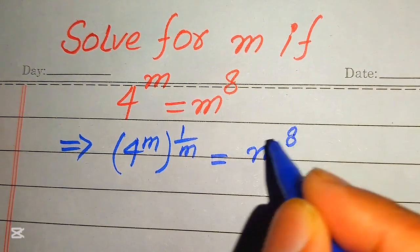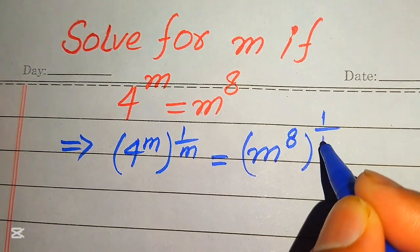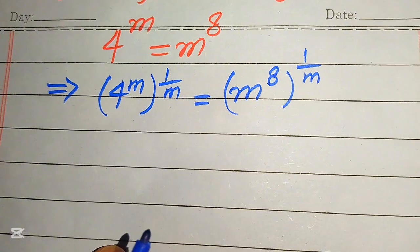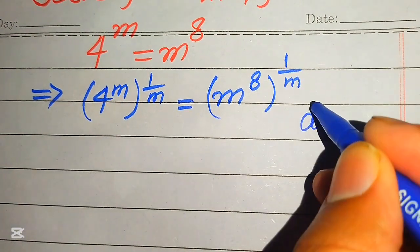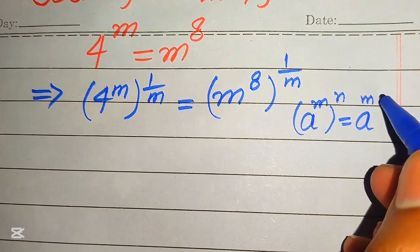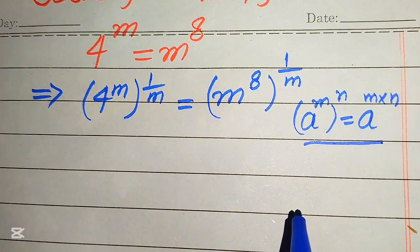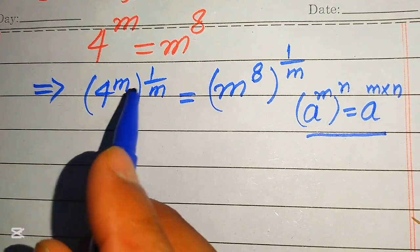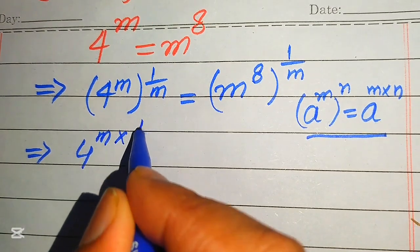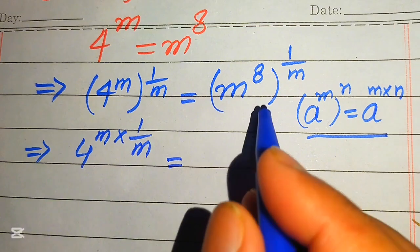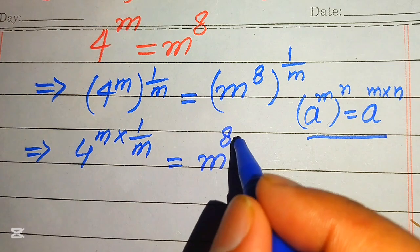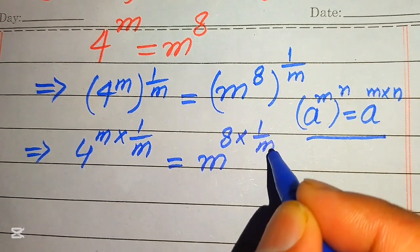It will be written as m to the power of 8, and its whole power is 1 over m. Now we apply the exponent law: a to the power of m to the power of n equals a to the power of m multiplied by n. According to this law, we multiply the two exponents, giving us 4 to the power of m multiplied by 1 over m, and on the right hand side, m to the power of 8 multiplied by 1 over m.